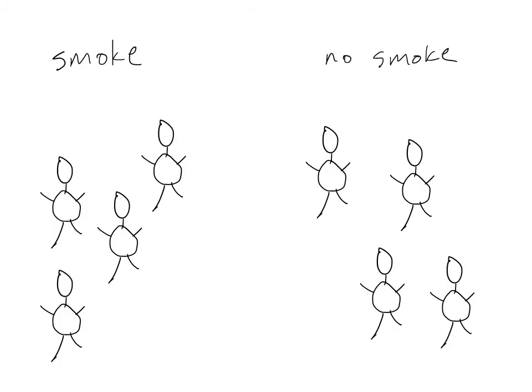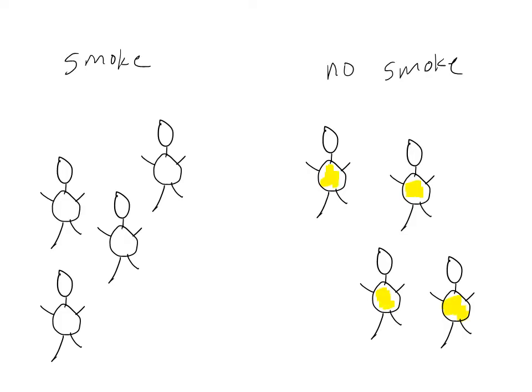Say we have a population of 8 people. 4 of them smoke, and 4 of them do not smoke. Those that do not smoke still have risk for cardiovascular disease. Their risk is attributable to all factors besides smoking. This risk related to factors other than smoking is represented in this slide by yellow.